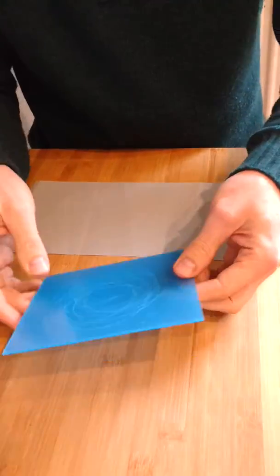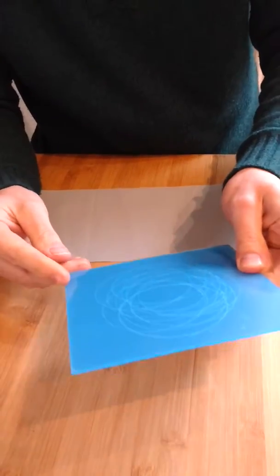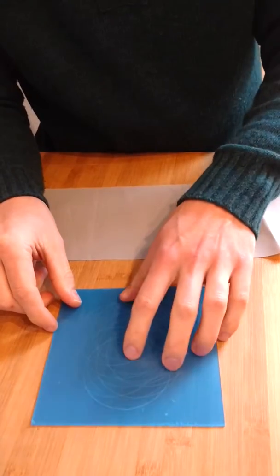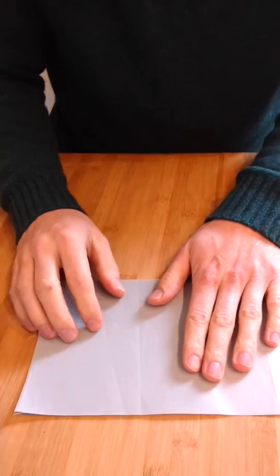First of all, you have to use something under your fabric like this plastic, for example. This comes with the boat circle cutter. It's not too hard and not too soft. You place your fabric on top of it.